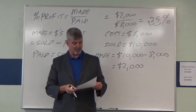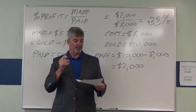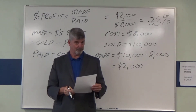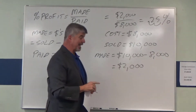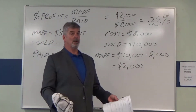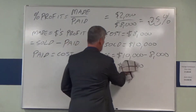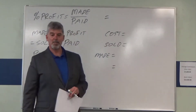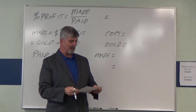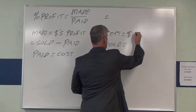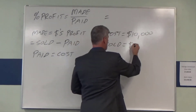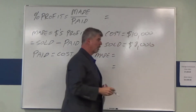Now I'm going to do a second example — we're going to show a loss. This one says the lot cost $10,000, but sold for $8,000. What is the percentage profit? Now, I hate to tell you, but people do lose money on real estate deals. And loss is really just negative profit. So I'm going to put the same numbers in as I read them out. We have a lot that cost $10,000, but sold for only $8,000. What did we make on the deal?